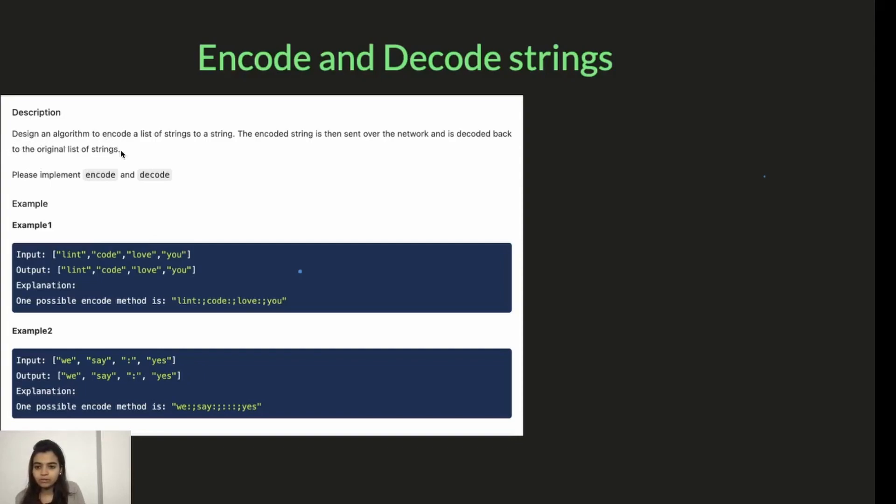Design an algorithm to encode a list of strings to a string. The encoded string is then sent over the network and is decoded back to the original list of strings. Please implement encode and decode function. So we will be given an input array with strings in it, like lint, code, love, you. And we have to make it into a single string.